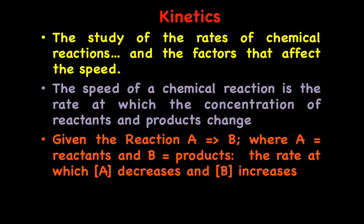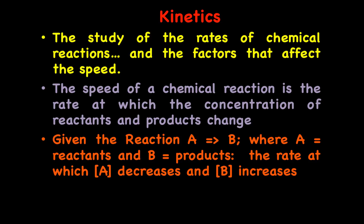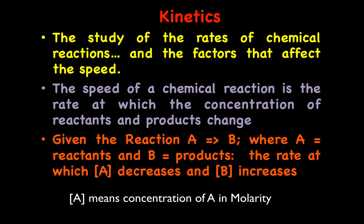Given the reaction A goes to B, where A are the reactants and B are the products, the rate of a reaction is the rate at which the concentration of A decreases and the concentration of B increases. The reactants change into products — the reactants disappear while the products appear. The brackets around A and B refer to the concentration, specifically molarity — moles per liter.